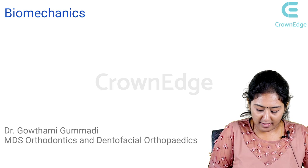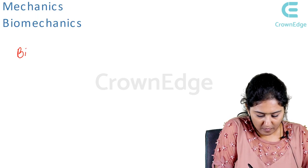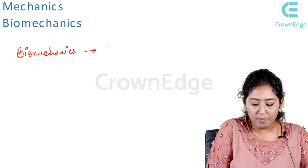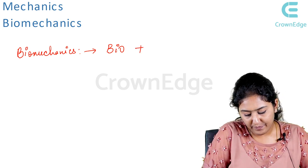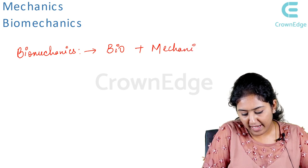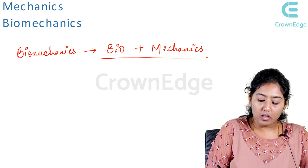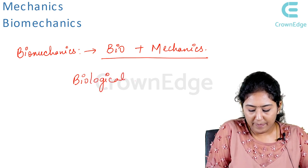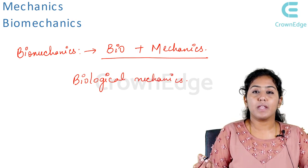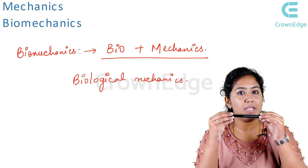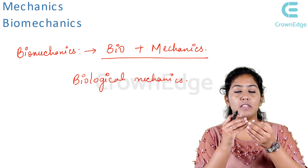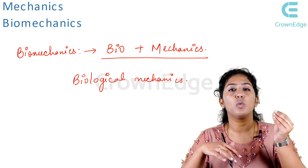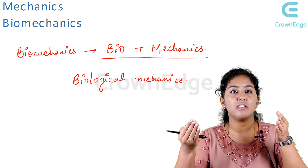The word biomechanics is derived from bio plus mechanics. So the mechanics which have been used in the biological environment is what is called as biological mechanics. In biomechanics, what we have to know is the basic physics — things like Newton's law and force. These are the basic terminologies which I will be using in today's video. The basic physical mechanics when implemented in an oral cavity under a biological environment — what are the effects we see — is what we are going to cover.